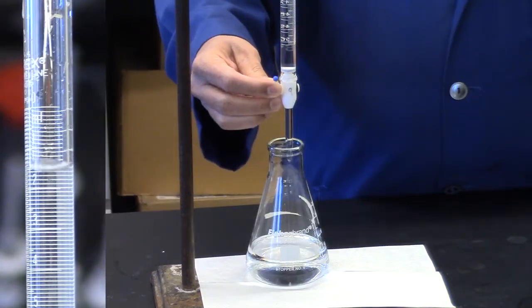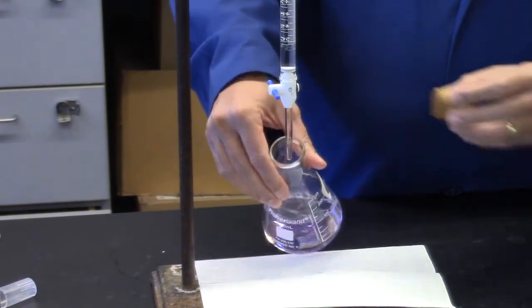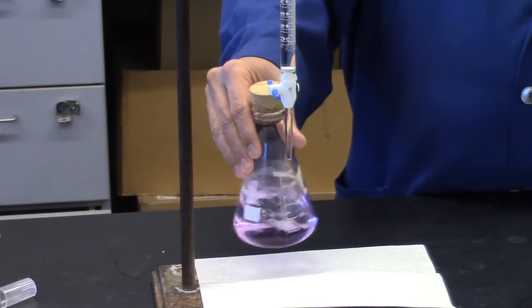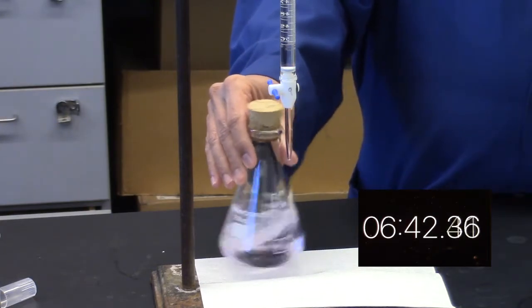Add the second milliliter of the 0.25 molar sodium hydroxide and record the burette reading. Swirl again at the same rate as before. Record the time when the flask again turns from pink to clear.